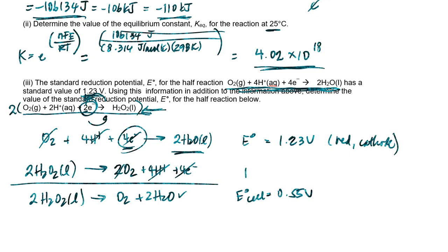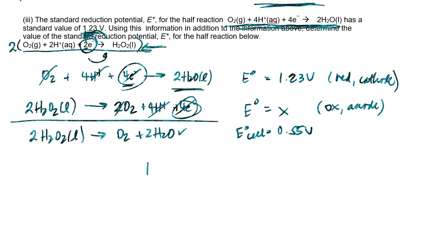Now here, this is the standard cell potential that we're trying to find. This is our variable. Notice that here, electrons are being lost. And so this must be our oxidation process which takes place at the anode. Then, taking a look at our equation for calculating standard cell potentials from standard half cell reduction potentials, remember that that's the reduction potential of the cathode minus the standard reduction potential of the anode.